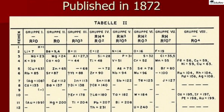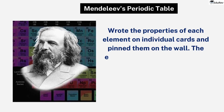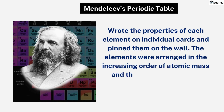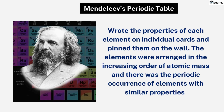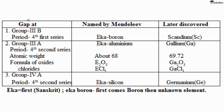He arranged the elements so that elements with similar properties fell into the same vertical columns of the periodic table. Among chemical properties, Mendeleev treated formulae of hydrides and oxides as one of the basic criteria for categorization. He wrote the properties of each element on individual cards and pinned them on the wall, observing a periodic occurrence of elements with similar properties. He predicted the existence of gallium, germanium, and scandium, all of which were discovered within 15 years of his predictions.